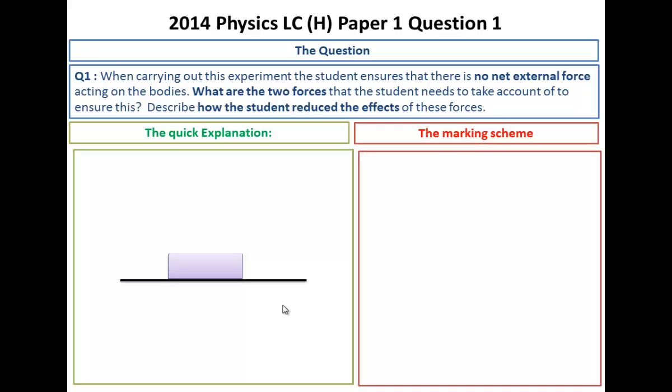For the next bit, the student was trying to make sure there was no other forces, external forces, acting on those bodies A and B. What are the two forces that a student needs to take into account to ensure this? It's two forces we're looking for and later how they reduce those effects. Well, let's start off. Well, the first force is weight acting downwards as it always does.